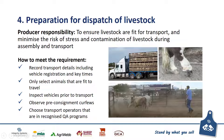The fourth element is preparation for dispatch of livestock. Your responsibility is to ensure that livestock are fit for transport and to minimise the risk of stress and contamination during assembly and transport. You need to record transport details including vehicle registration and key times as part of your NVD. Only select and transport animals that are fit to load — there's a great resource called the Fit to Load Guide. Inspect vehicles prior to transport, observe any pre-consignment or sale yard curfews, and choose transport operators that are in recognised QA programs where applicable.